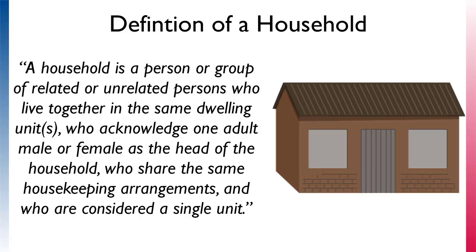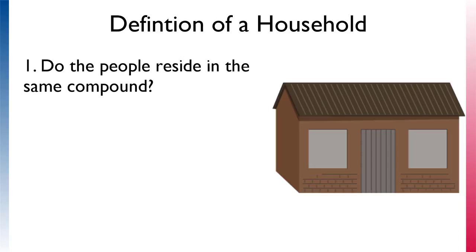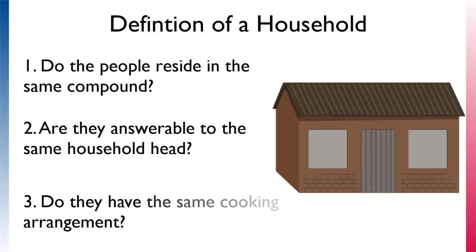They share the same housekeeping arrangements and are considered a single unit. In other words: do the people reside in the same compound? Are they answerable to the same household head? And do they have the same cooking arrangement? If the answer to any of these criteria is yes, then that group of people are identified as a household.